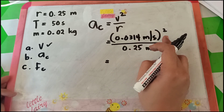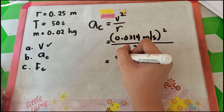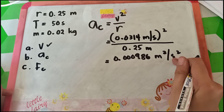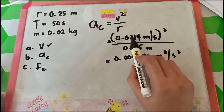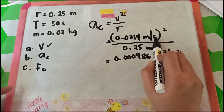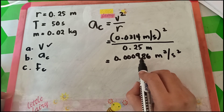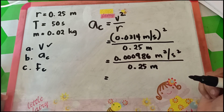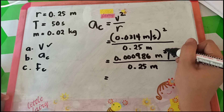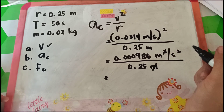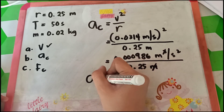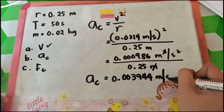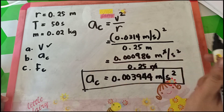So, 0.0314 squared equals 0.000986 meters squared per second squared — meter squared per second squared because we multiplied both the number and the unit by itself. Dividing by 0.25 meter, we cancel one meter from the numerator with the meter in the denominator. The final answer for our centripetal acceleration is 0.003944 meters per second squared. This is our centripetal acceleration.